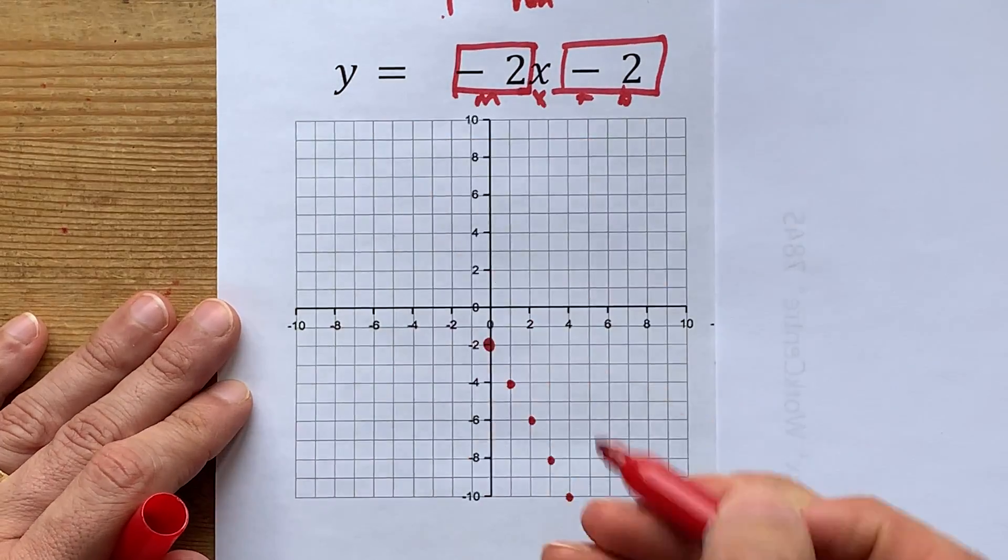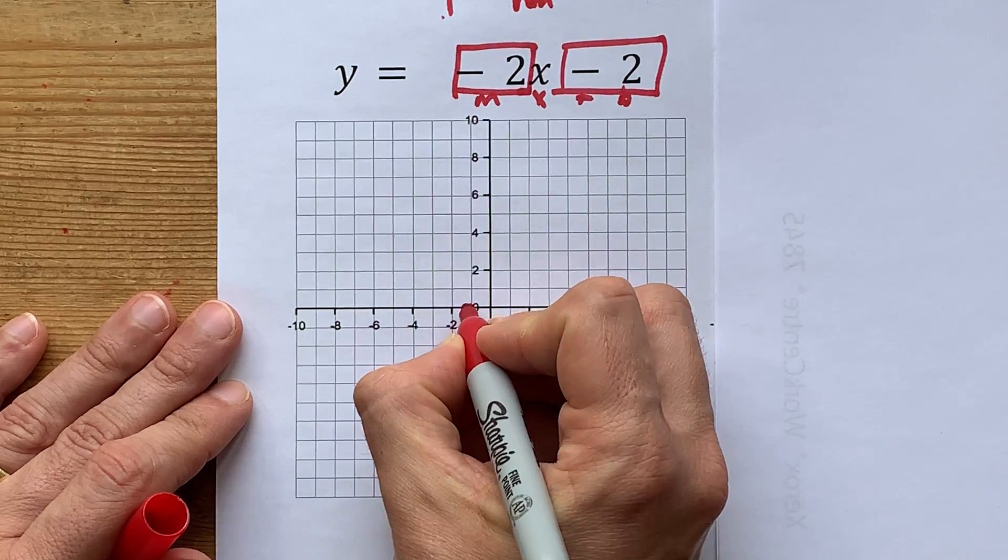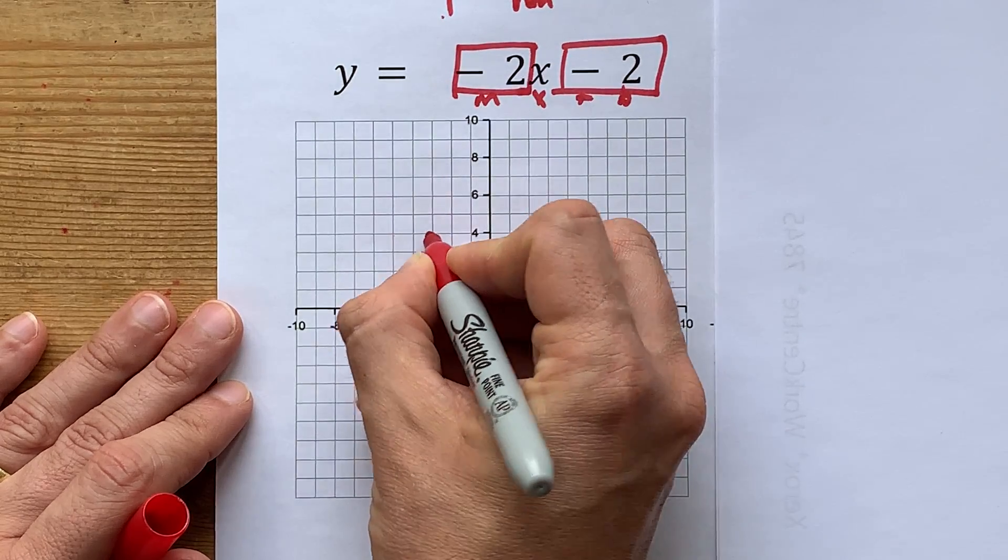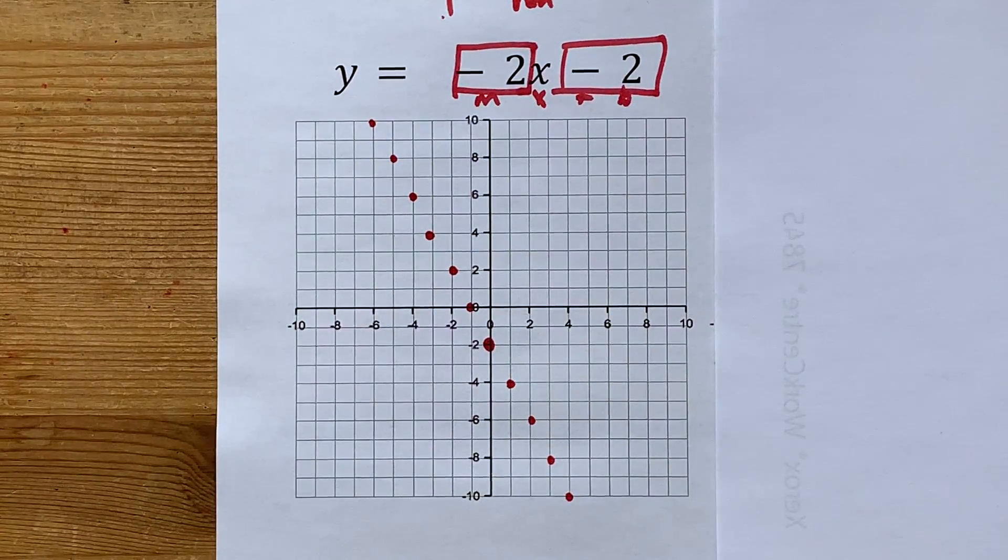If you want to backtrack, you just have to reverse both of those and go up 2, left 1. Up 2, left 1. Up 2, left 1. Over and over and over, probably until you run out of space on your grid.